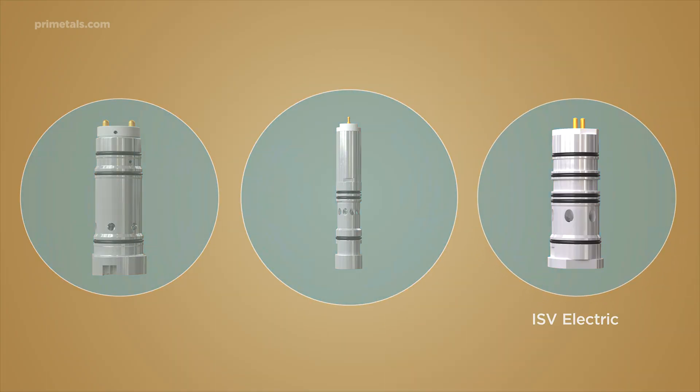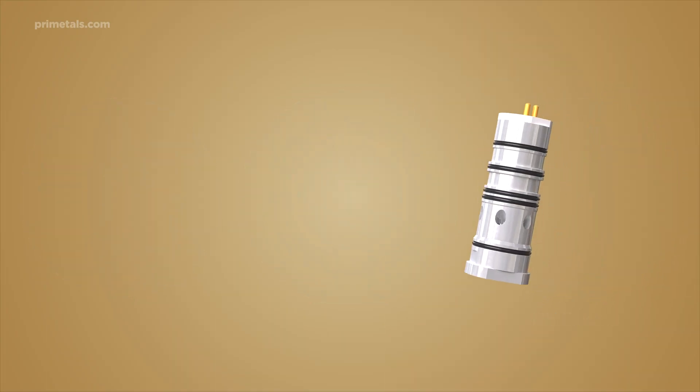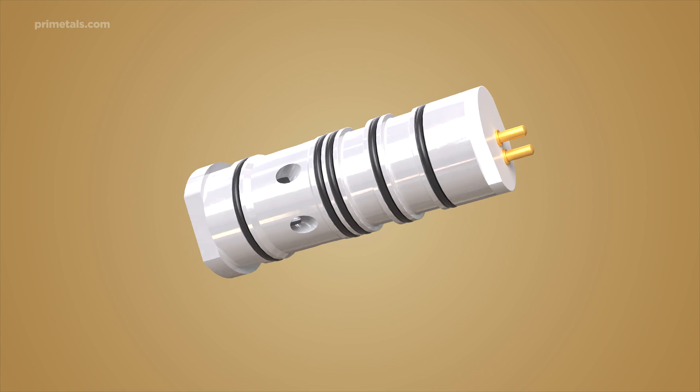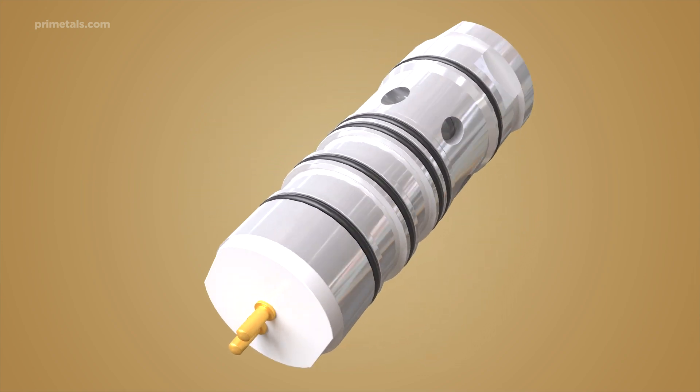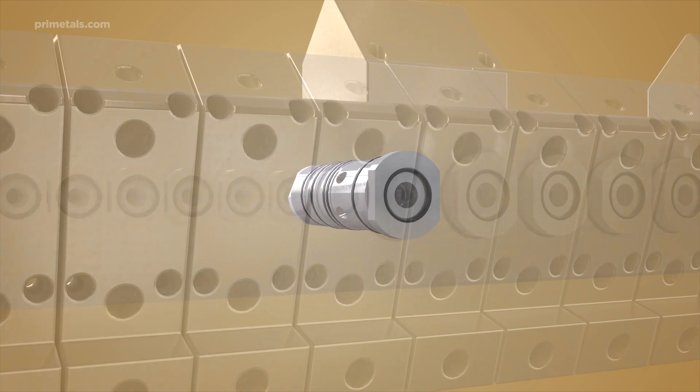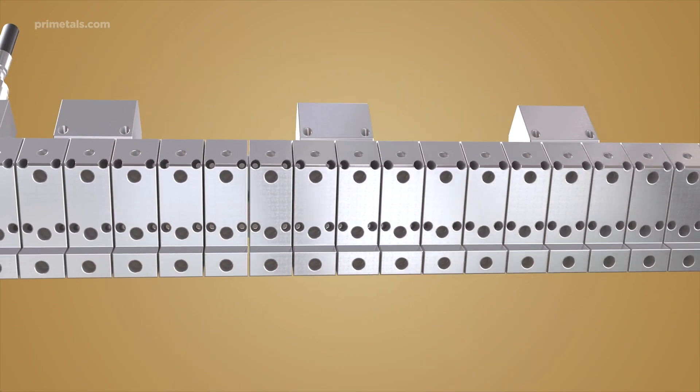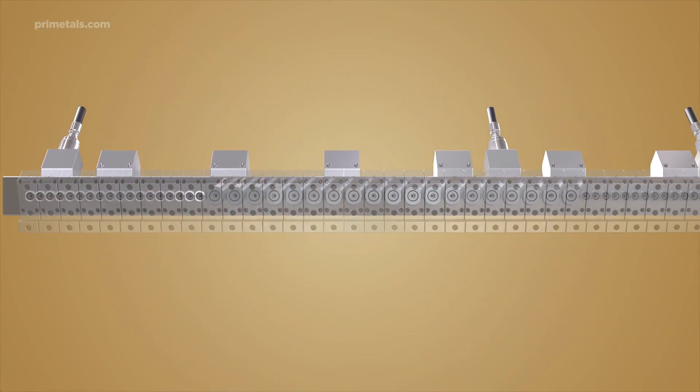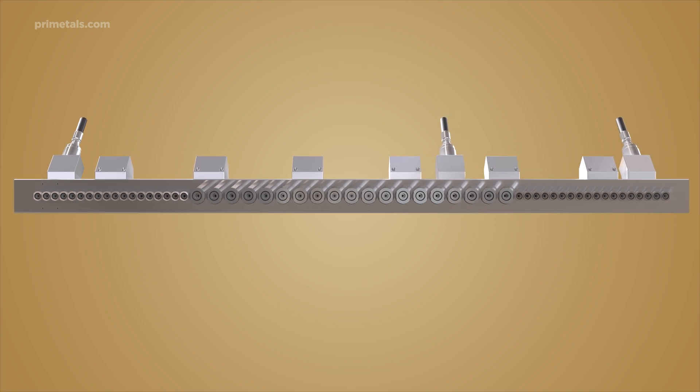The ISV electric is a 52 millimeter fully electrically operated valve, ideal for meeting the growing cooling demands of modern high power rolling mills. It can work in a hybrid zone configuration alongside the ISV electric compact, providing a cost-effective solution for finer strip edge flatness control.